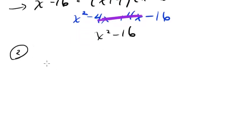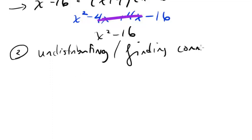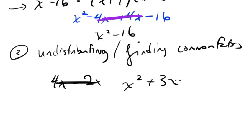Number two is something I call undistributing. That's not very grammatical, but that's OK. Or finding common factors. And this is the idea of, let's say we have something like 4x minus 2x. No, that's bad. Not a good expression.